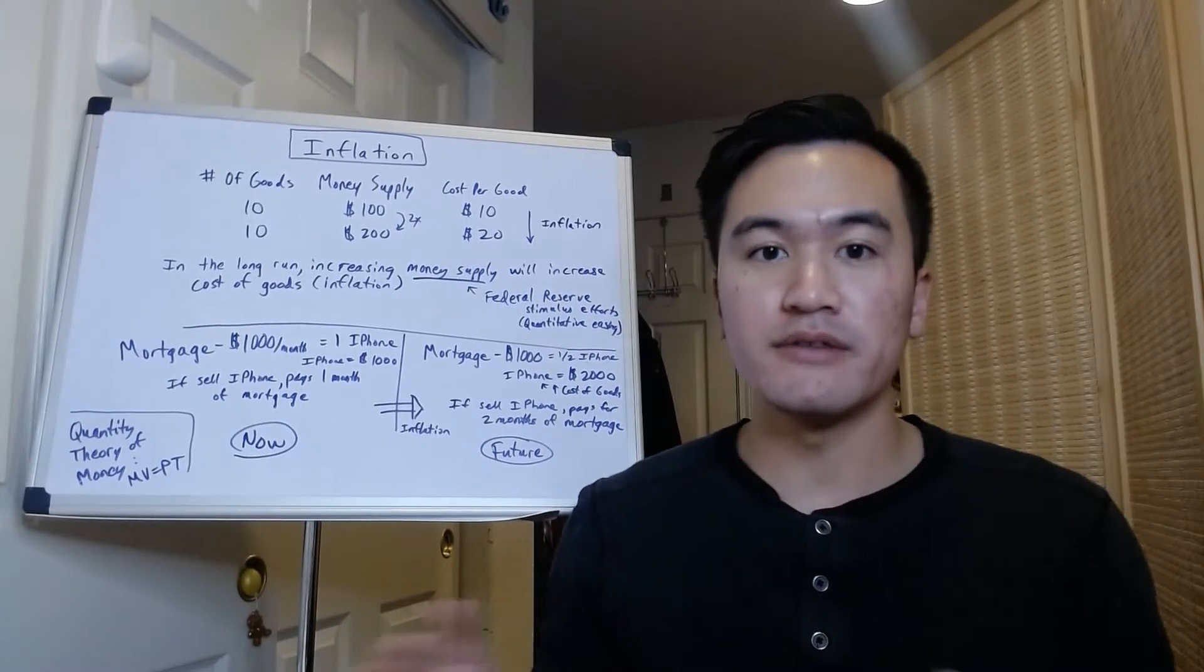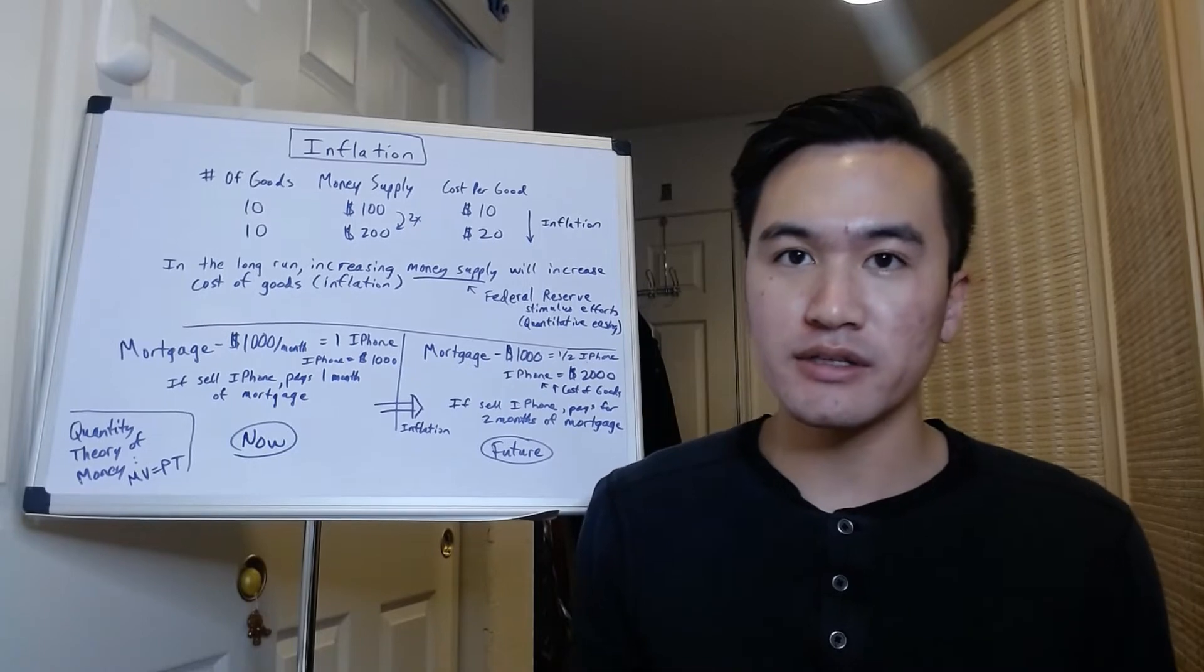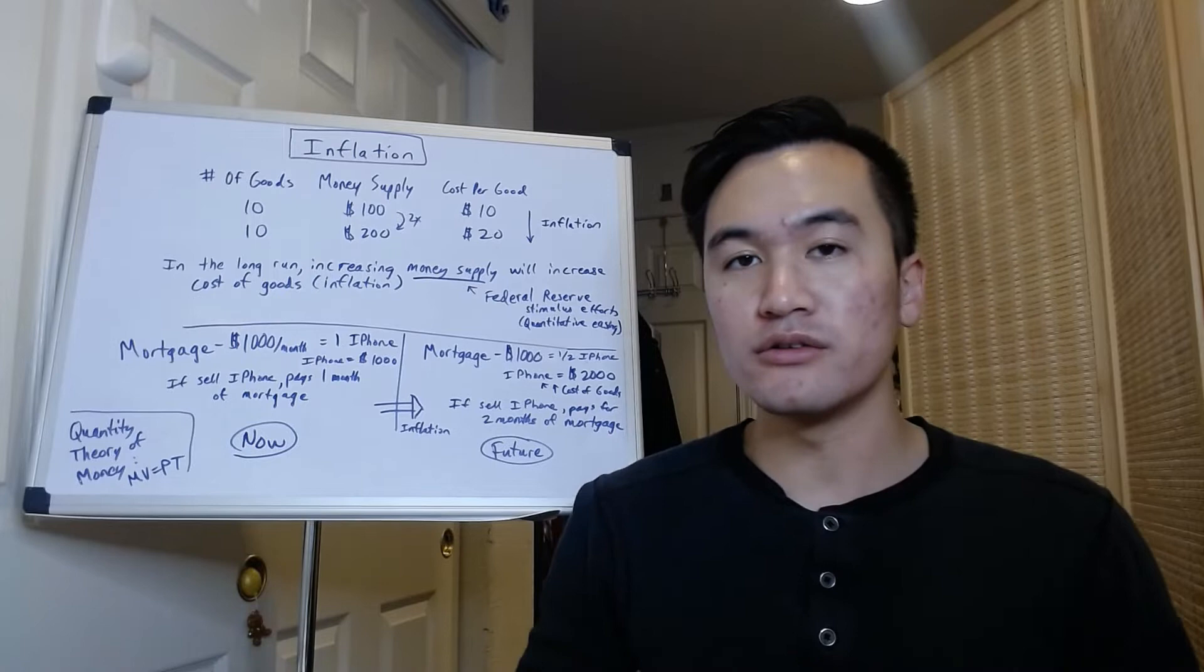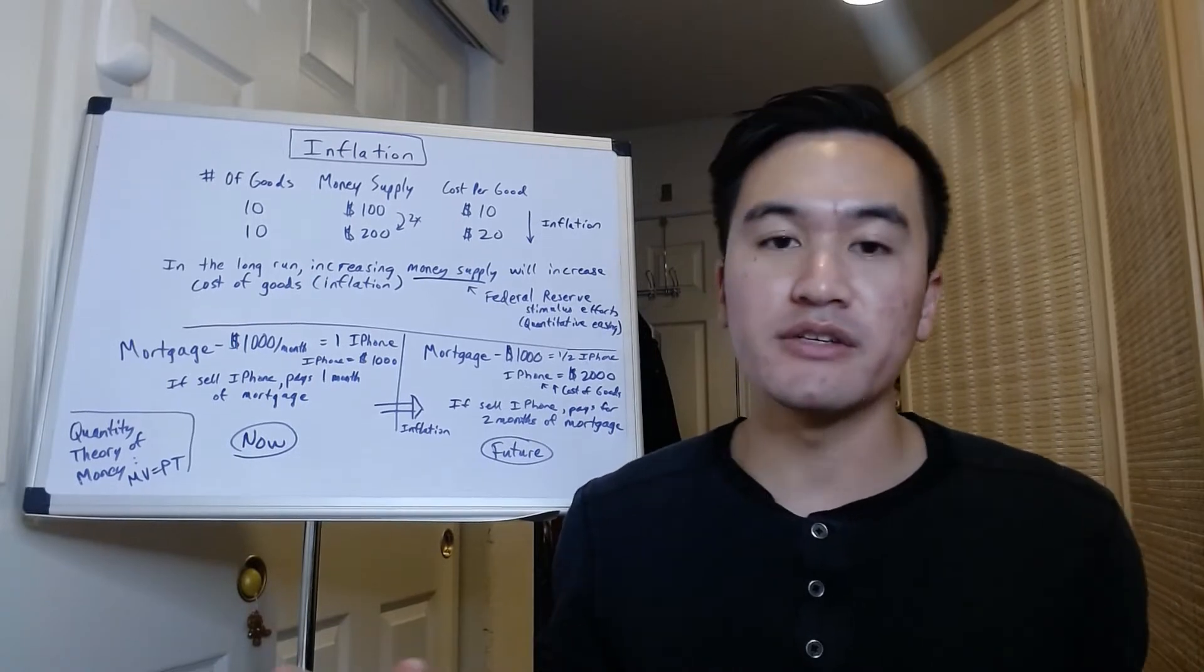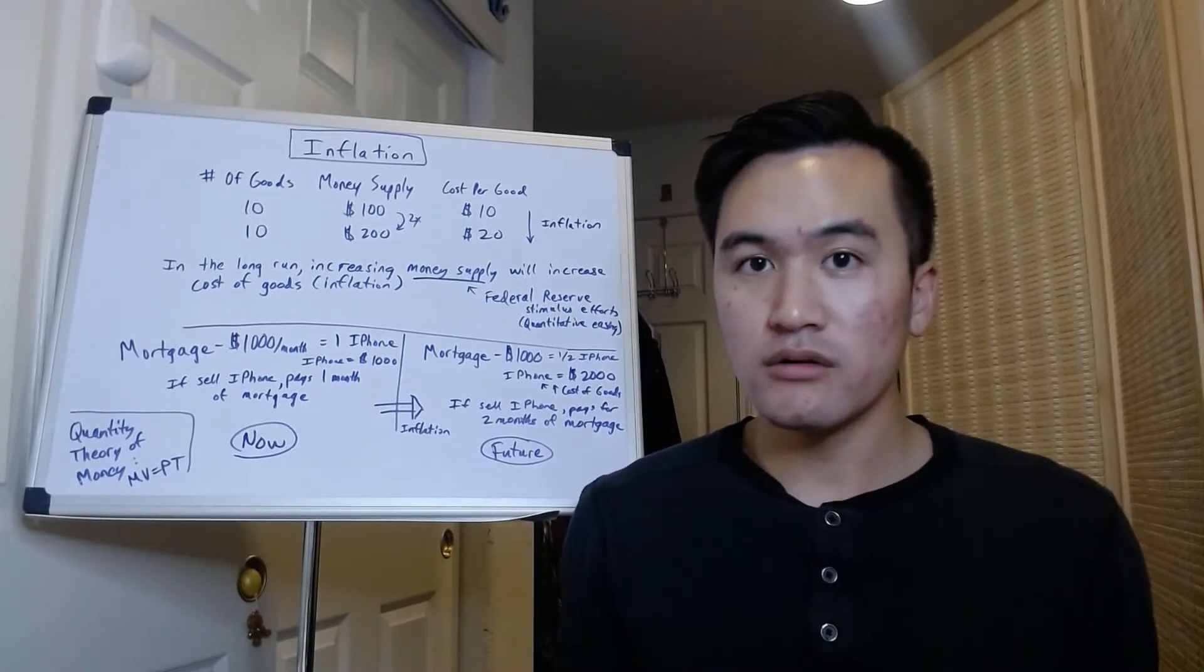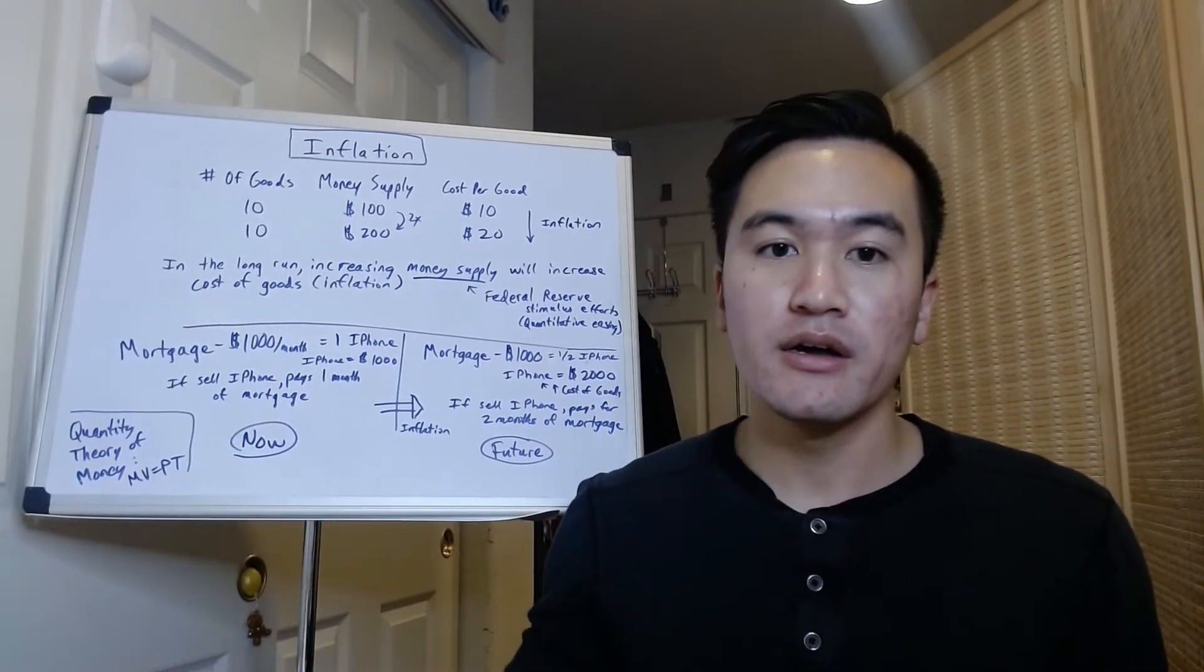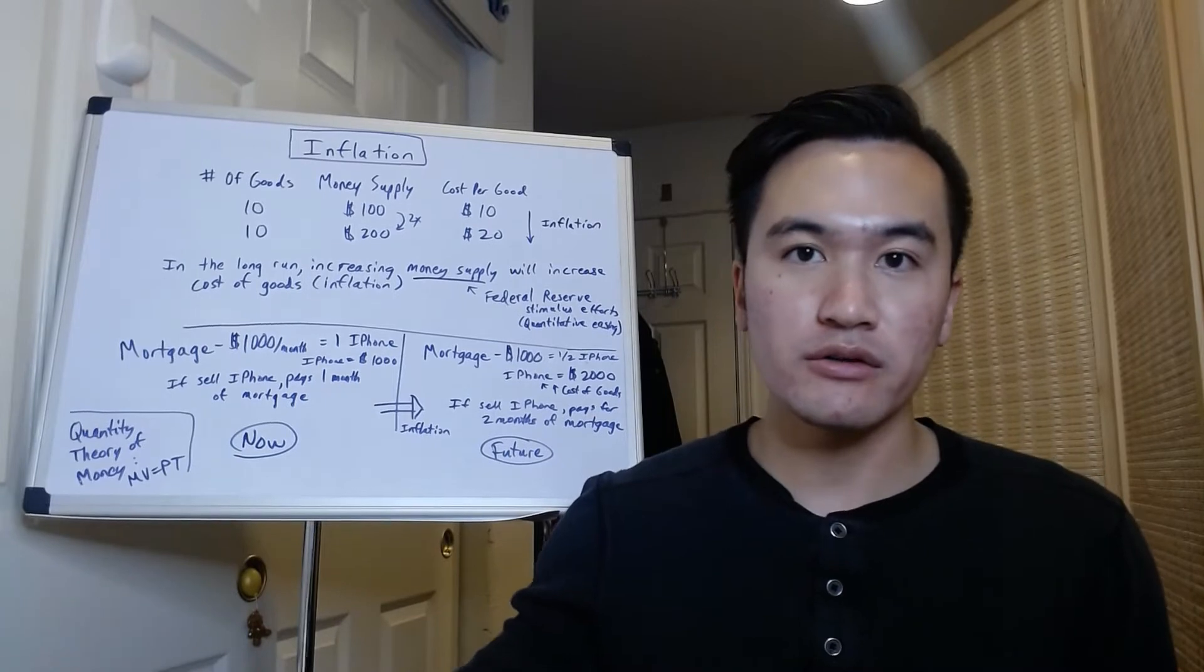We're going to talk about something called inflation. Inflation is basically when the cost of goods go up over time due to an increase in money supply. So in general, in the long run, the more money there is out there, the more the cost of goods will increase.